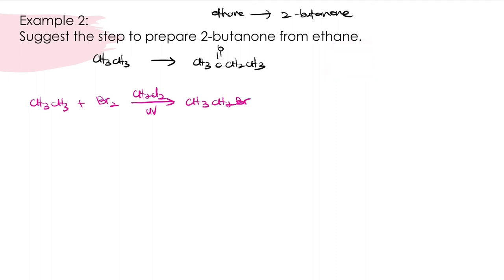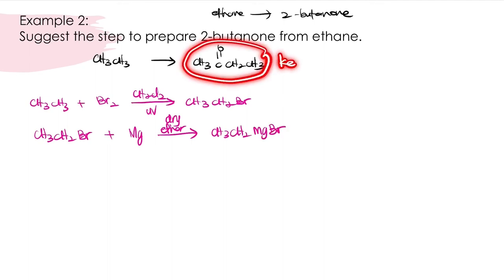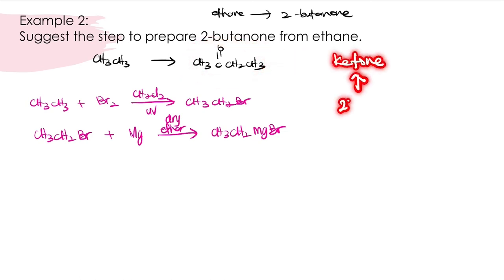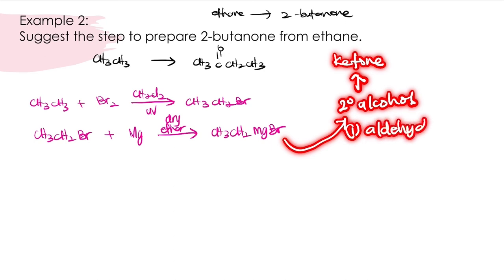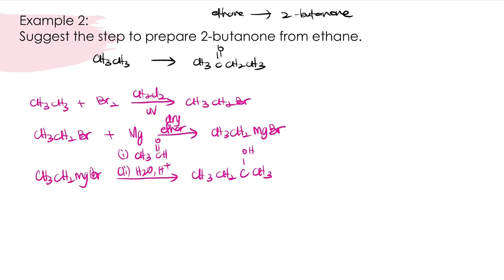Since we are producing ketone, the Grignard reagent needs to be converted into secondary alcohol. To convert it to secondary alcohol, the Grignard reagent needs to react with ethanal, followed by hydrolysis, and we will get secondary alcohol which is 2-butanol. Next, this secondary alcohol 2-butanol will be oxidized using strong oxidizing agent to produce 2-butanone.